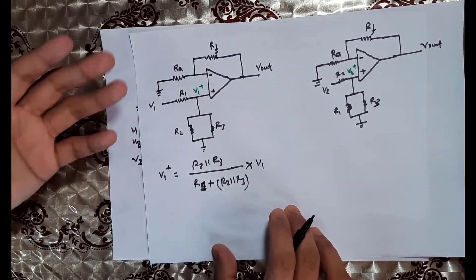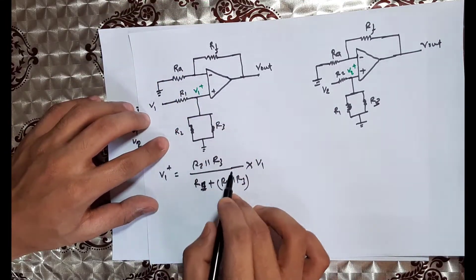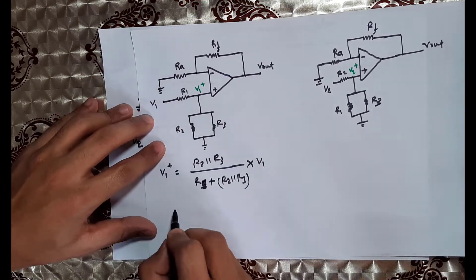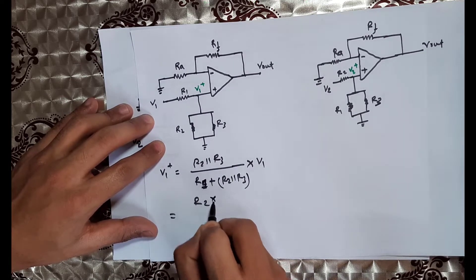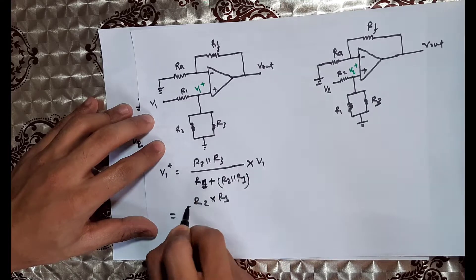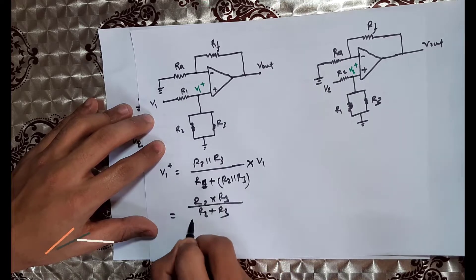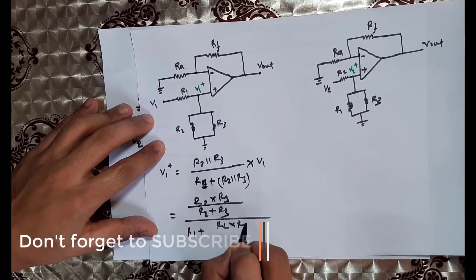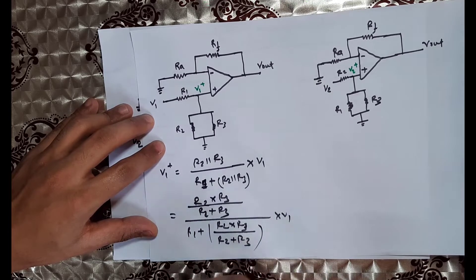We have found that V+ due to V1 equals R2 parallel R3 divided by R1 plus R2 parallel R3, multiplied by V1. Simplifying: R2 parallel R3 equals R2 times R3 divided by R2 plus R3, and substituting gives the full expression.